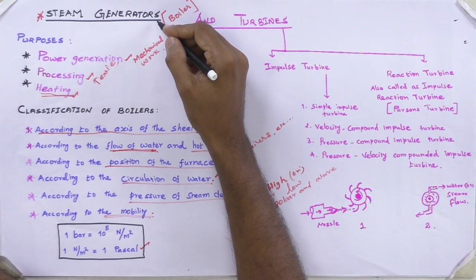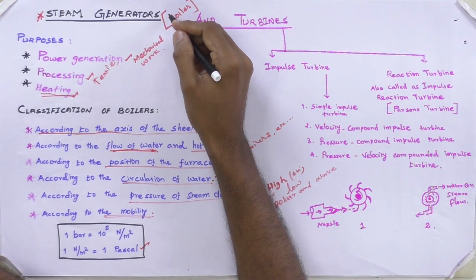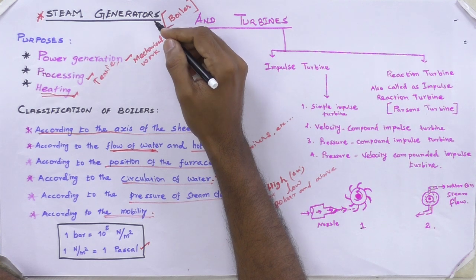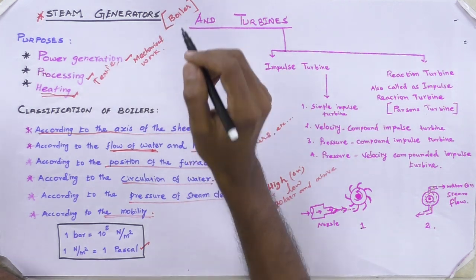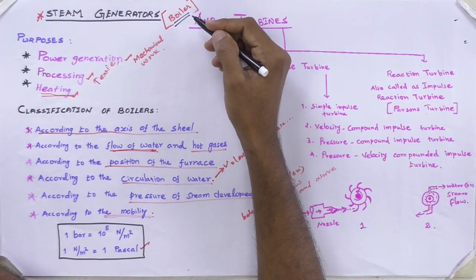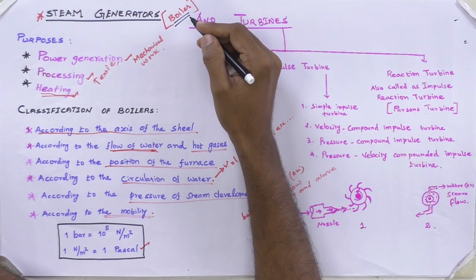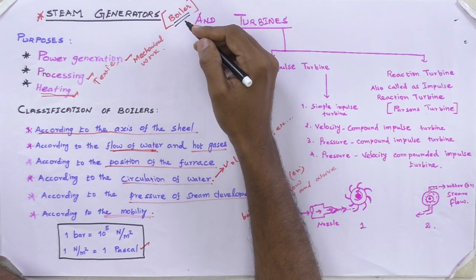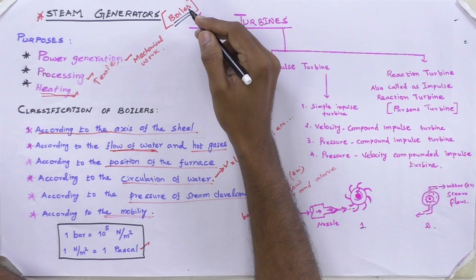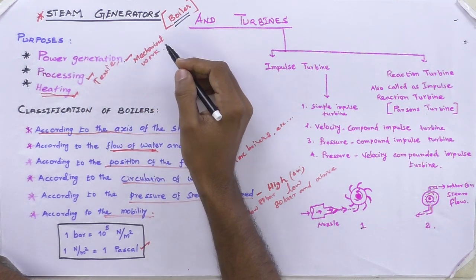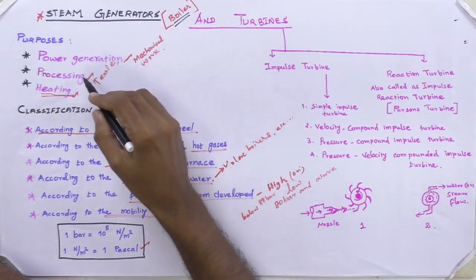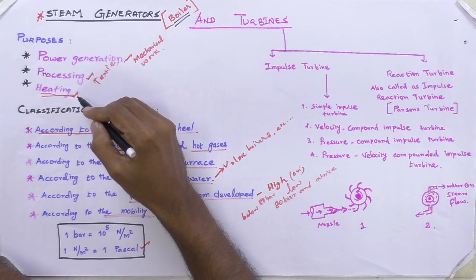This is the steam generator, also called a boiler, which generates steam above atmospheric pressure. A boiler is a closed vessel which generates steam by transferring heat produced by burning of fuel to water. The steam is used for the following purposes: power generation, mechanical work, and processing like a textile industry, and then heating.